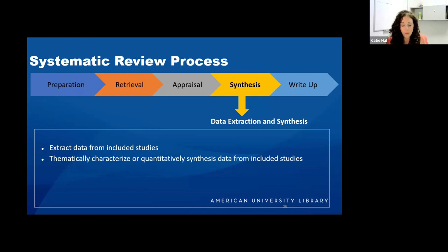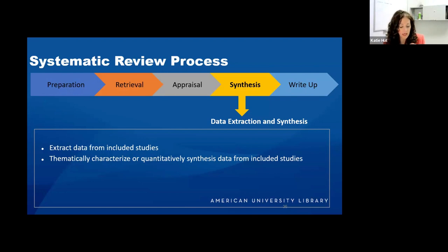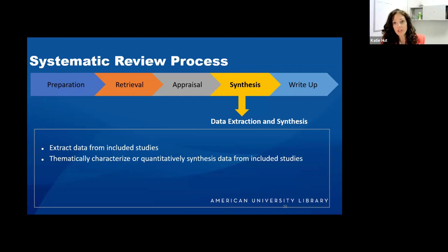You extract the data relevant to your study — you can use a framework to help, going back to your question, or look at other systematic reviews to see what they extracted. You may want to include information about the article: author, title, date of publication, DOI, type of study, how participants were recruited, level of evidence, participant demographics, interventions, and outcomes.